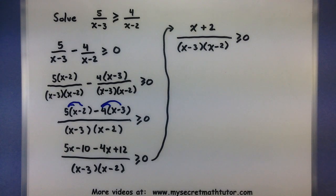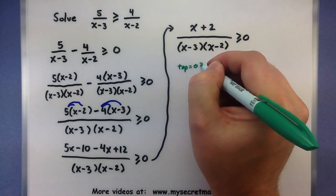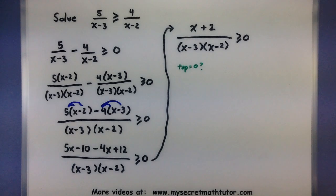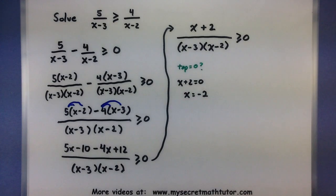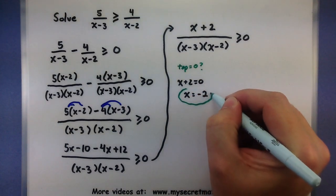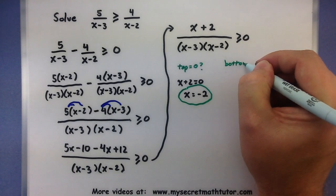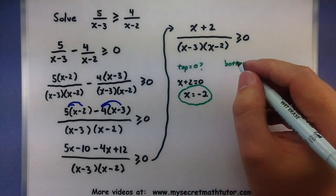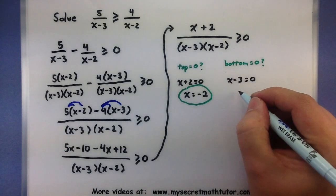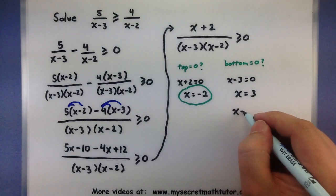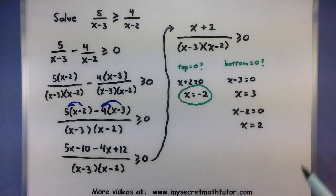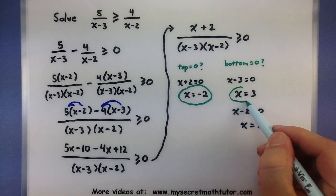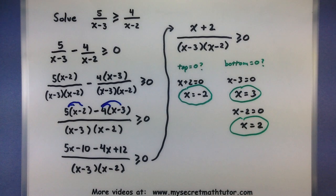Now let's find where the top and bottom are equal to 0. Grab the top, x plus 2, set it equal to 0 and solve directly — one of our critical values is x equals negative 2. For the bottom, we have two factors: x minus 3 equals 0 when x equals 3, and x minus 2 equals 0 when x equals 2. So we have three critical values total: one from the top and two from the bottom.